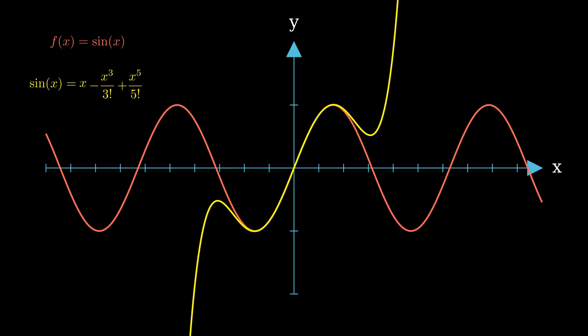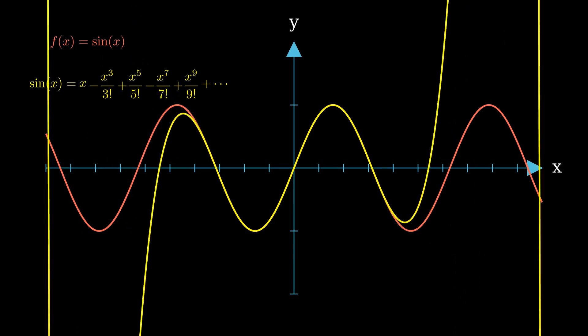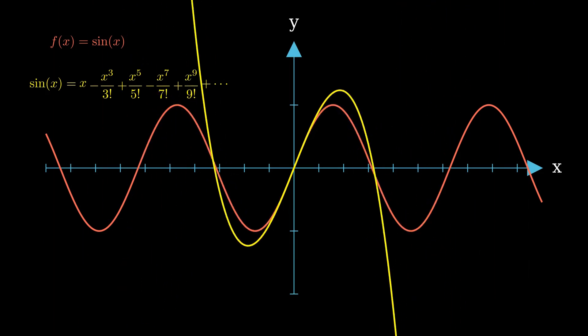However, as we take more derivatives, our expansion begins to look a lot more like our original sine of x function. Depending on your application, it is possible that you may only need a few polynomials from our Maclaurin series. I'm going to play the animation several times so you get a feel for the approximation. Let us also keep in mind that as we go to infinity, our series is equal to our sine of x function.